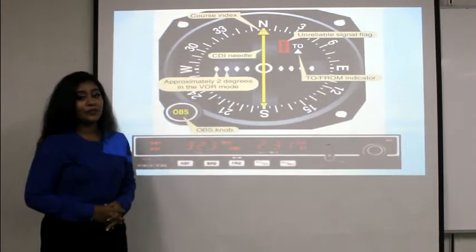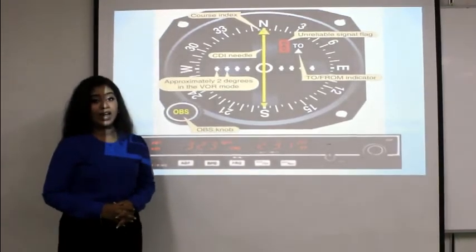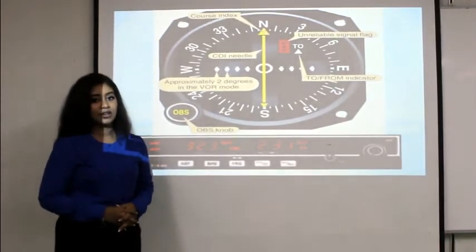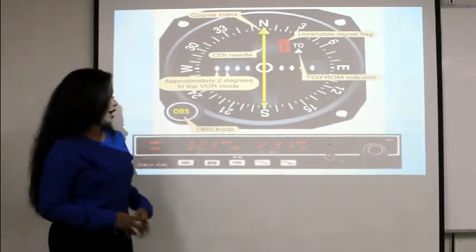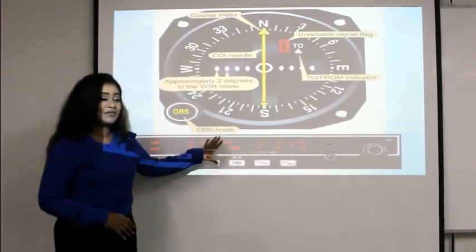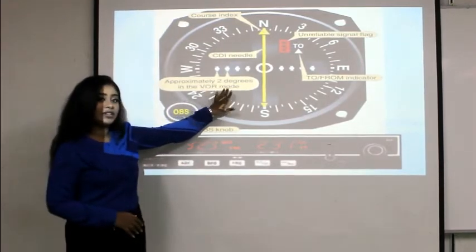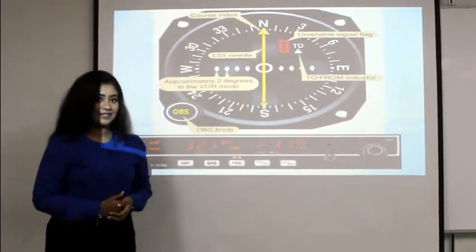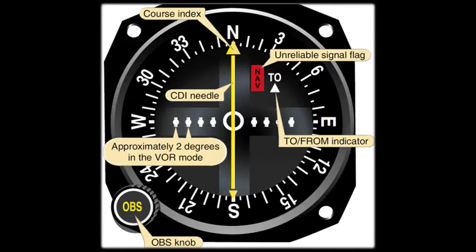As I mentioned before, VOR has a receiver and an indicator which is in the cockpit. This is the receiver, which is actually a tuning device, and this is the indicator. Prior to navigating to or from a VOR station, you have to enter the VOR frequency and each VOR station identifies its own Morse code identifier.